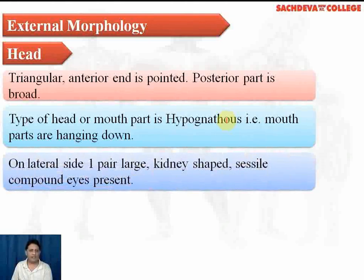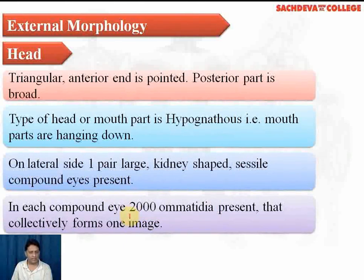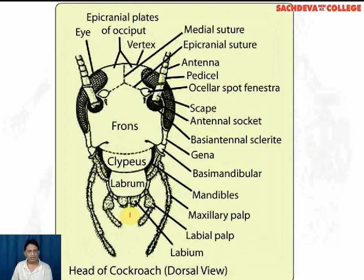On the lateral side, one pair of large kidney-shaped compound eyes are present. Each compound eye contains 2000 ommatidia, which are the basic structural and functional units of compound eyes. The ommatidia collectively form one image. The top of the head is called the vertex. This is the compound eye, this is the antenna, and this is the forehead known as the frons. To the frons is attached a chitin plate known as the clypeus.